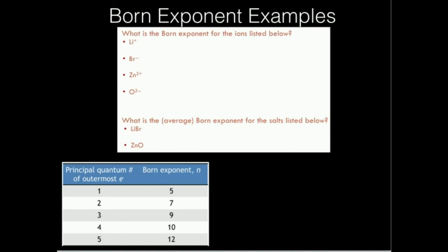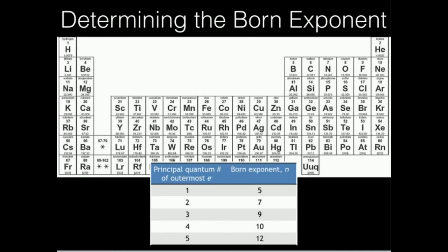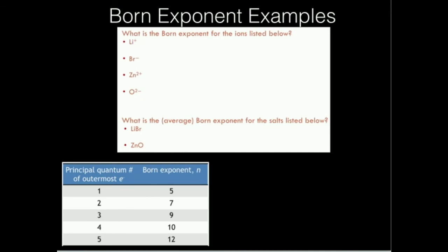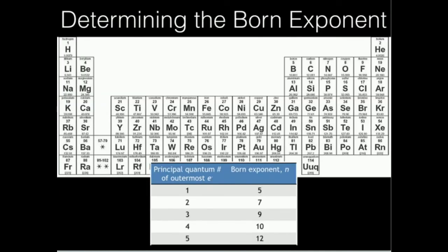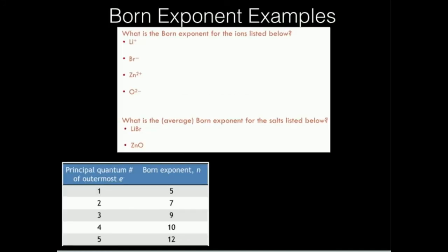That's sufficient when we want to calculate the Born exponent for individual ions, but we rarely ever have individual ions — they're always in a compound. So we want to find the average Born exponents. For lithium the Born exponent was 5, and for bromide it's 10. To find the average we just average 5 and 10: 5 plus 10 is 15, divided by 2 is 7.5. So for lithium bromide the average Born exponent is 7.5. For zinc oxide: zinc lost the 4s2 electrons so its outermost is in a 3d, making it 3, giving a Born exponent of 9. Oxide has a Born exponent of 7. The average of 7 and 9 is 8, so for zinc oxide the average Born exponent is 8.